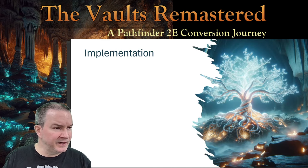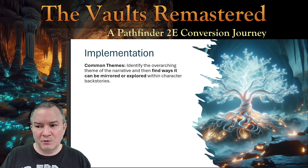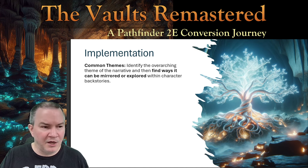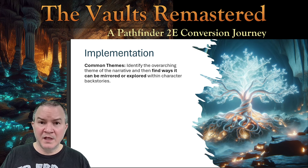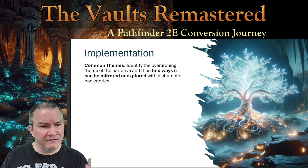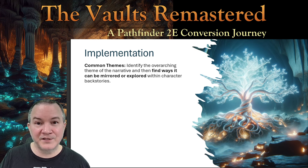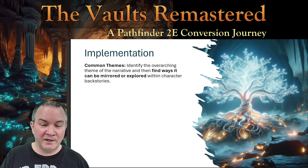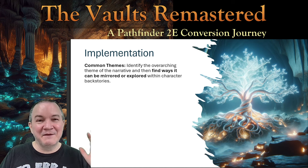Implementation — how do you go about doing this? Common themes: you need to identify the overarching theme — what is your story about? Then figure out some ways in which that theme is mirrored or explored within the characters' backstories. As your players are making their characters, you should have this Session Zero, or give them something like that Outlaws of Ulkenstar player guide — here's what your character has to do, how they fit in the story, here's the concept you need to build. Whatever it is, tell them. Make them do it. Otherwise they could come up with whatever.